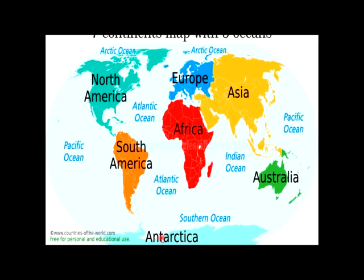The five oceans are: the Arctic Ocean, the Pacific Ocean, the Atlantic Ocean — part of which lies between South America and Africa — the Southern Ocean, and the Indian Ocean.